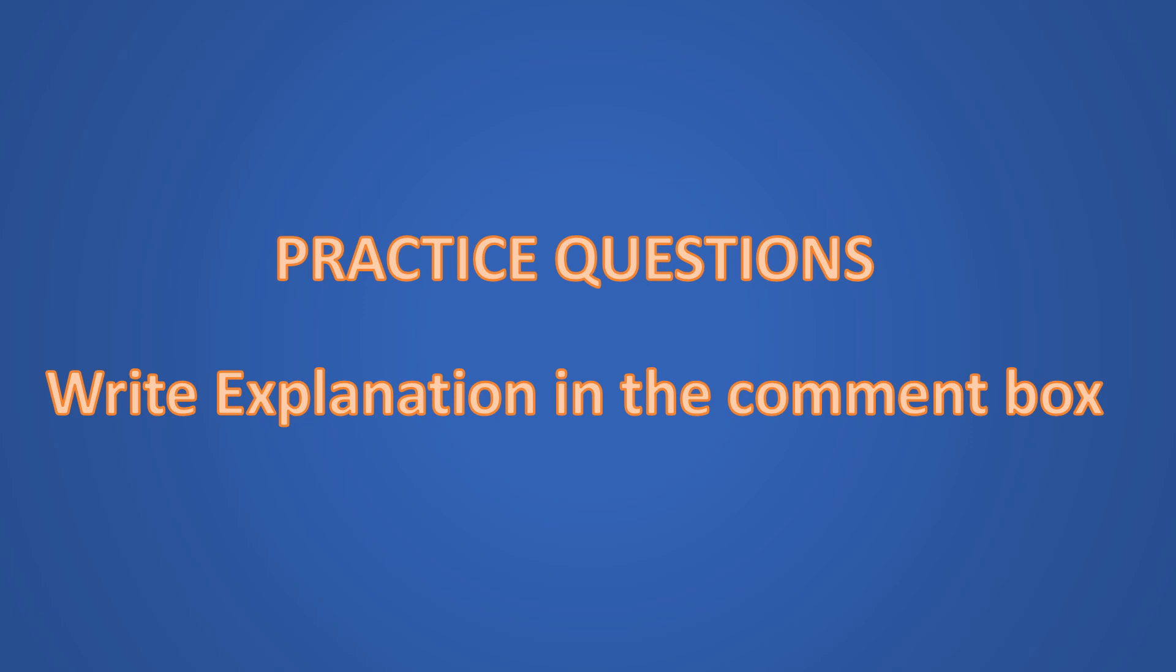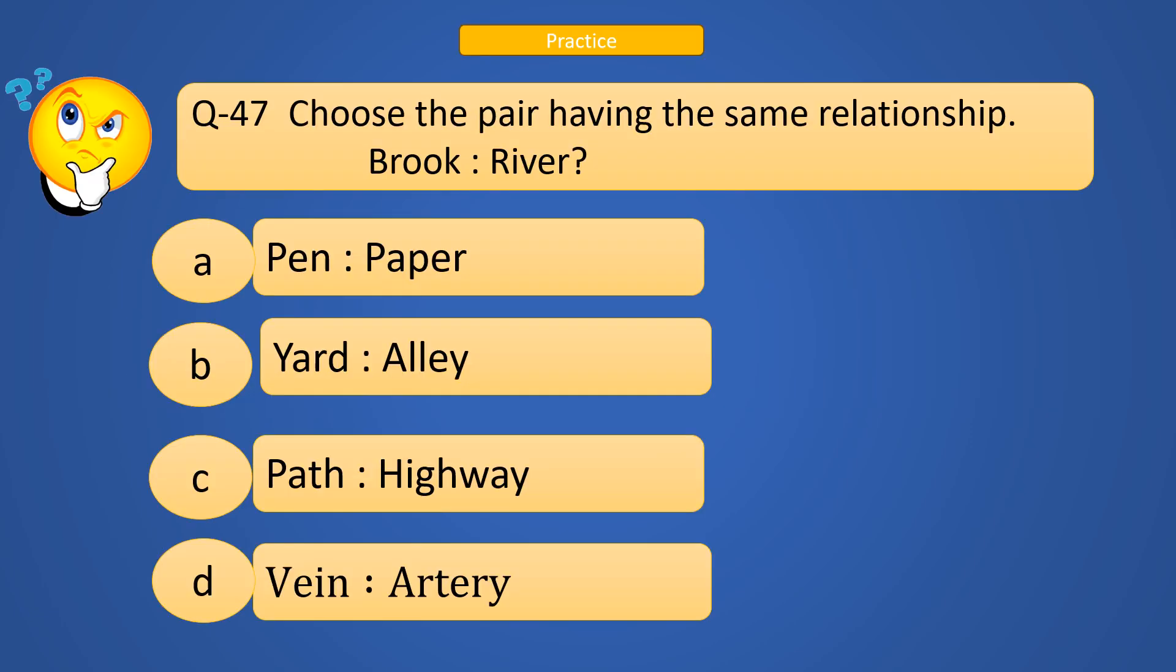Now more practice questions. The question is choose the pair having the same relationship, Brook : River. The options are Pen : Paper, Yard : Alley, Path : Highway, Vein : Artery.